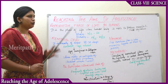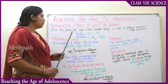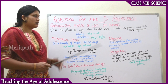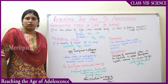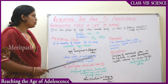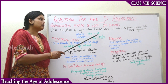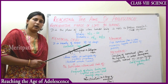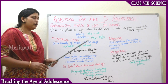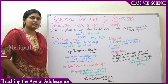Reproductive phase of life in human beings: this is the phase where the human body is able to produce gametes — sperm and eggs — and then reproduce. In males, the reproductive phase starts from age 11 to 13 and lasts up to 60 years of age. In females, the reproductive phase starts at 10 to 12 years of age and ends at 45 to 50 years of age. At these ages, males and females can reproduce.